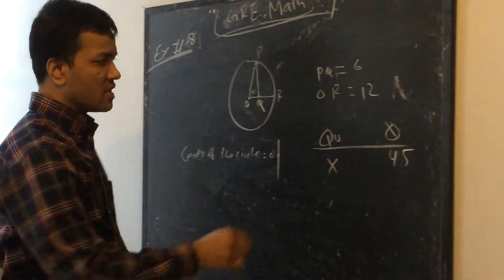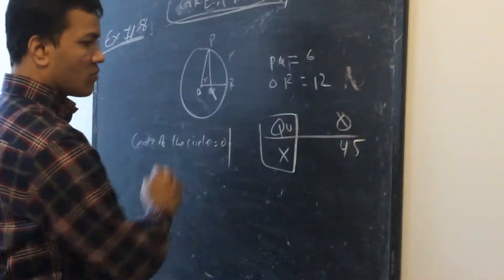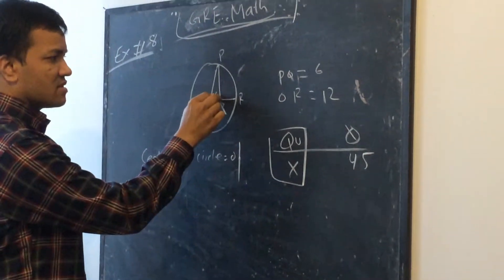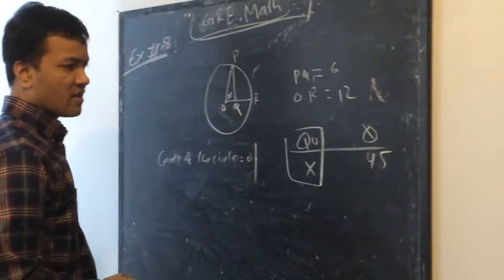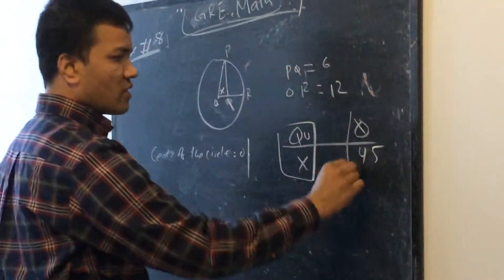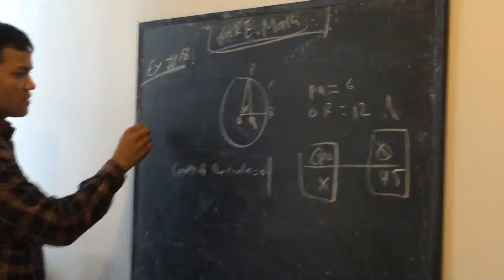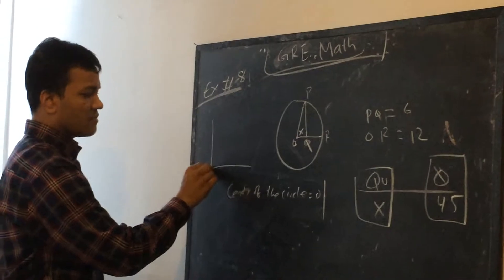Now the question is asking you whether quantity X is bigger. Quantity X means the degree over here is bigger, or quantity 45 is bigger. Do you know from your experience if this is 45 degrees?